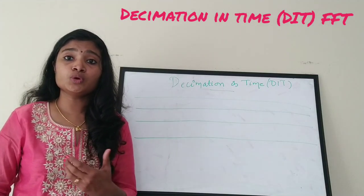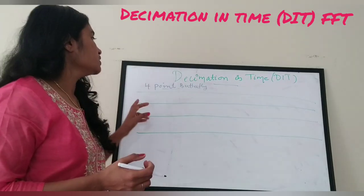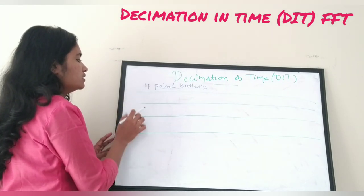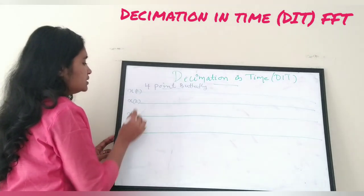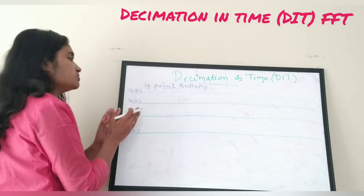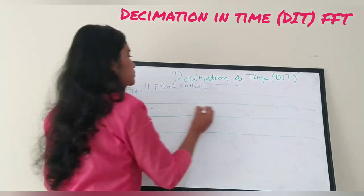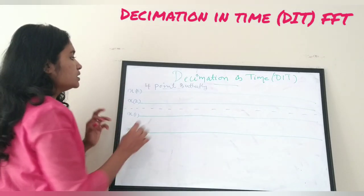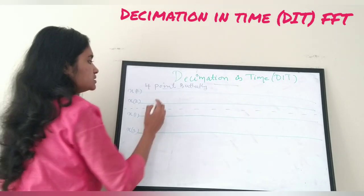Now I am going to draw the four-point butterfly diagram for decimation in time. I have drawn four lines. For the four-input butterfly, the inputs are applied as: x of 0, x of 2, x of 1, and x of 3 — that is, even-index inputs first, then odd-index inputs. There is a dotted line to show the separation. For the first stage, the four-point butterfly diagram consists of two stages, and for the first stage there are two butterflies.